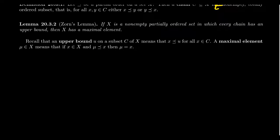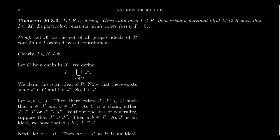Note the distinction: a maximum element means everything is smaller than it; a maximal element means there's nothing bigger than it — and there could be multiple maximal elements. A maximum element is always maximal, but there can be multiple maximal elements in a partially ordered set. Zorn's Lemma tells us that if we have a non-empty partially ordered set such that every chain has an upper bound, then the partially ordered set has a maximal element — a very useful condition in infinite-dimensional algebra, where things are not bounded by finite conditions, unlike Noetherian rings.